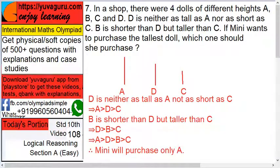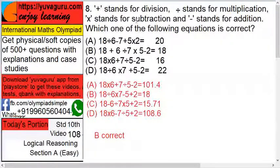Greater than C. So in the figure also we'll put B will be between D and C. So who is the tallest? A. So she will purchase only A.